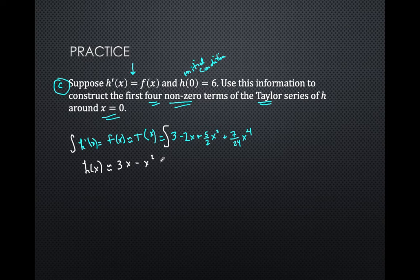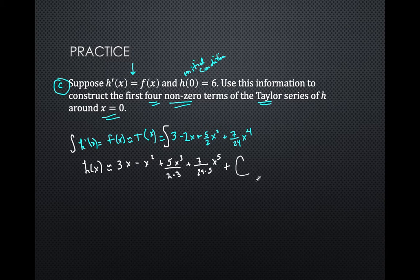And then, what do I have? 3x minus x squared plus 5x cubed over the 2, but also then times 3. Plus 7 over 24 times 5, x to the 5th. Plus what? Plus C, baby. Don't forget that. Now, what does that mean? How do I solve for C?